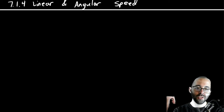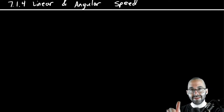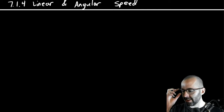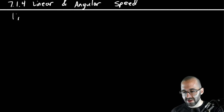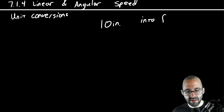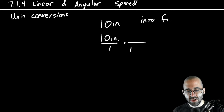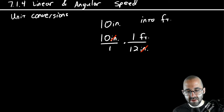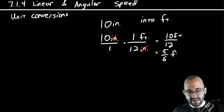This is the coolest section and it will also be part of your activity this week — this video. The main topic is unit conversions. For example, to convert 10 inches into feet, we start with 10 inches, knowing that 12 inches equals one foot. We put inches on the bottom so they cancel, leaving 10 over 12, which reduces to five-sixths of a foot. That's unit conversions.